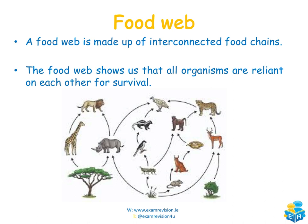A food web is made up of interconnected food chains — many food chains intermingled with each other. Looking at a food web, we can pick out individual food chains: plant → giraffe → lion; tree → rhino → lion; or plant → grasshopper → bird → skunk → hawk. A food web shows that all organisms are reliant on each other for survival.